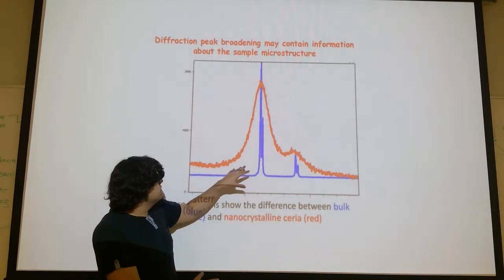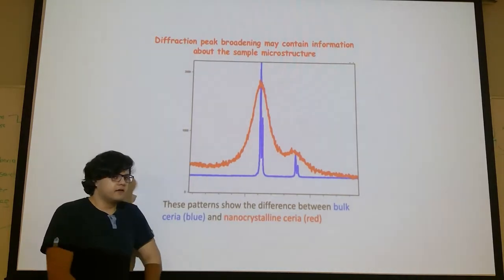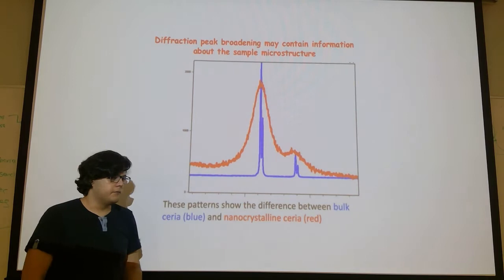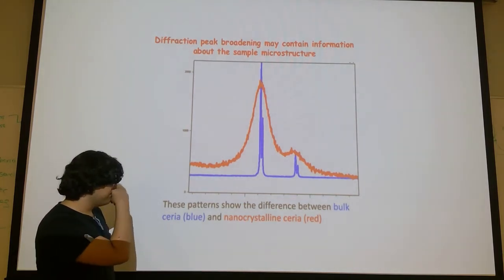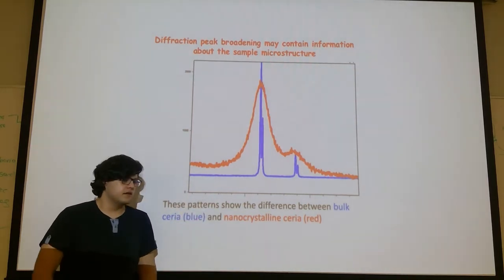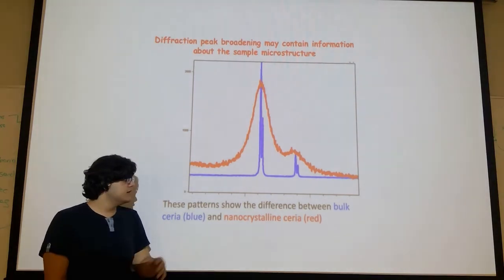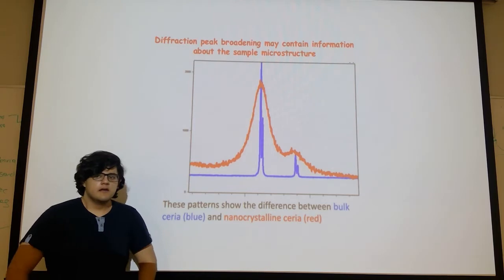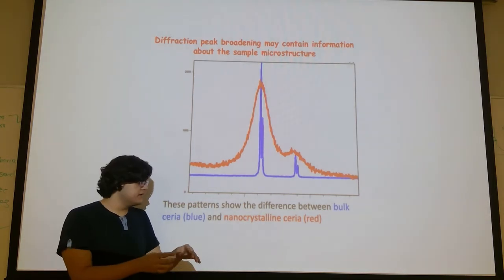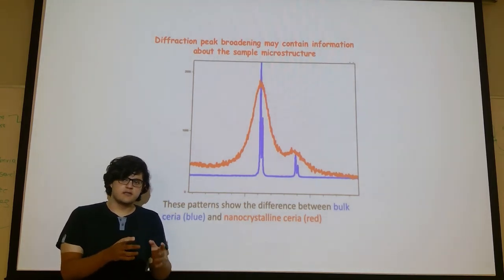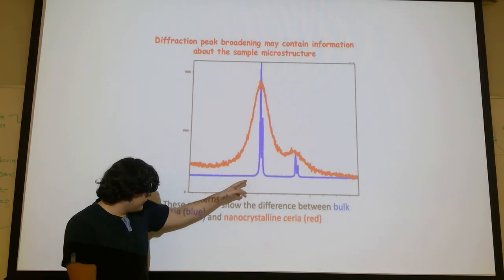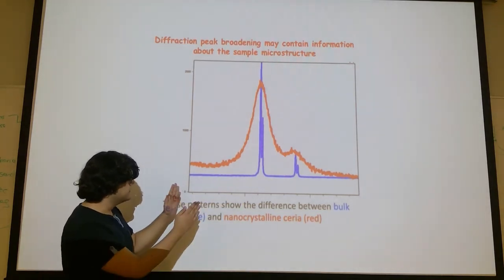We can see it more clearly here in this graph. This red here is of a nanocrystallite, and this blue one is a microcrystal. And the difference is very clear, because this happens because there are much less planes in the nanocrystallites, because there are less atoms in a very small crystal. So the diffraction isn't as strong, and there isn't as much interference, so the intensity isn't as big.